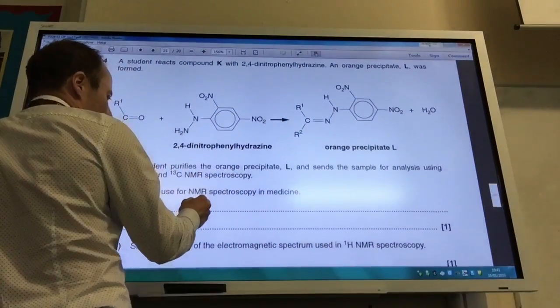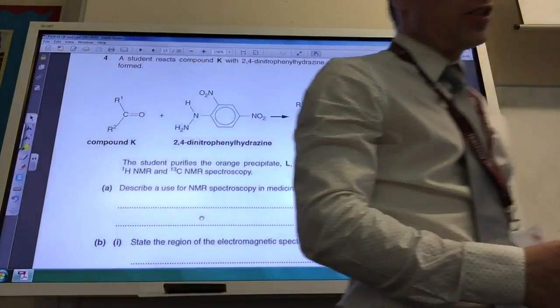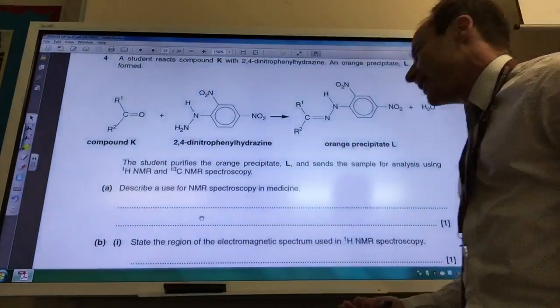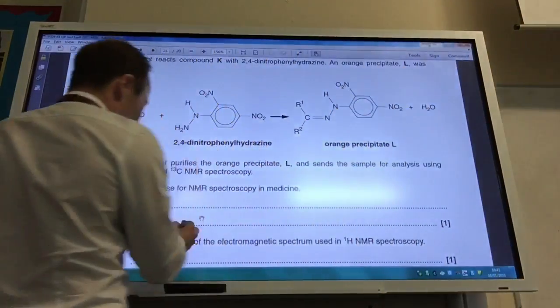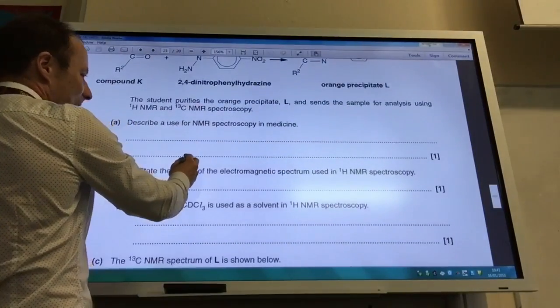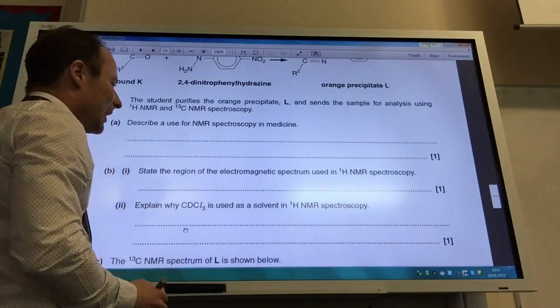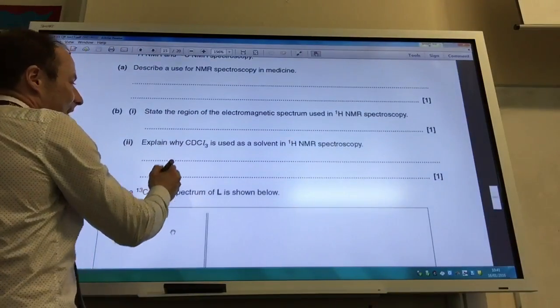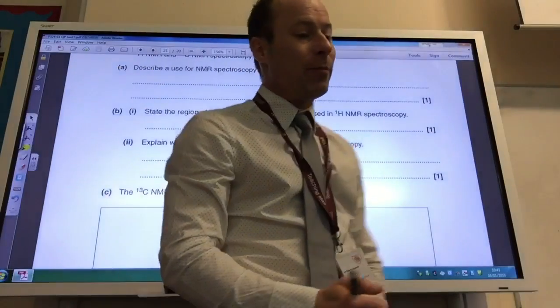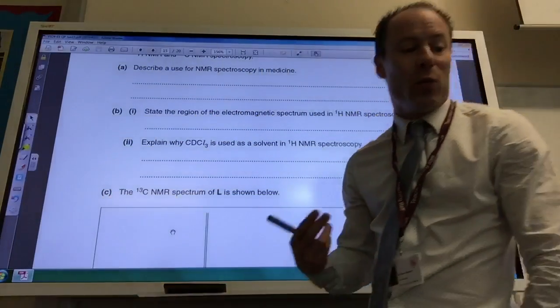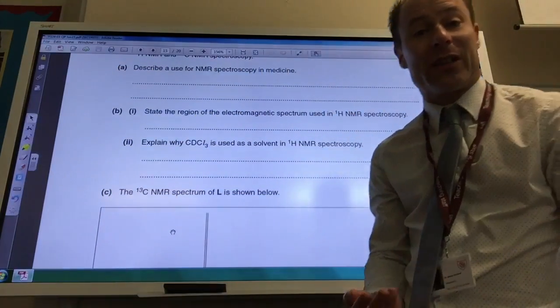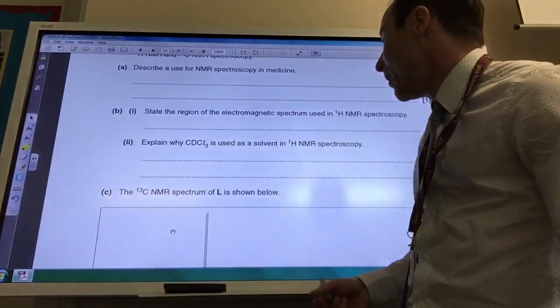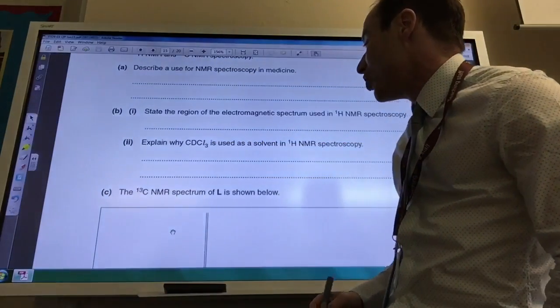Does NMR spectroscopy be used in medicine? Well, the various body scanners and so on. State the region of the electromagnetic spectrum used, it is of course radio. Why is CDCl3 used as a solvent in proton NMR? It's because it won't have any protons and therefore it doesn't give a signal because the H is being replaced by deuterium.